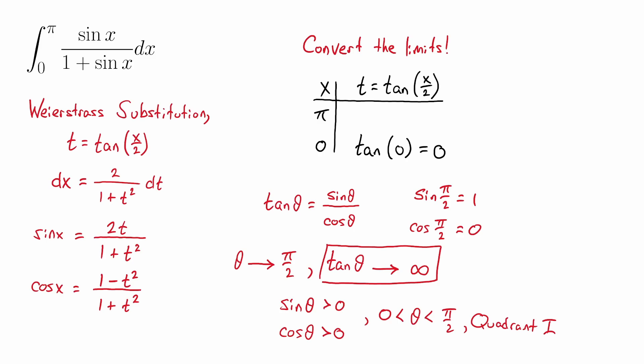So that's going to be our upper limit here. When x approaches π, tangent of x over 2 approaches positive infinity. So our original limits for x, 0 to π, convert now with the Weierstrass substitution to limits from 0 to positive infinity.